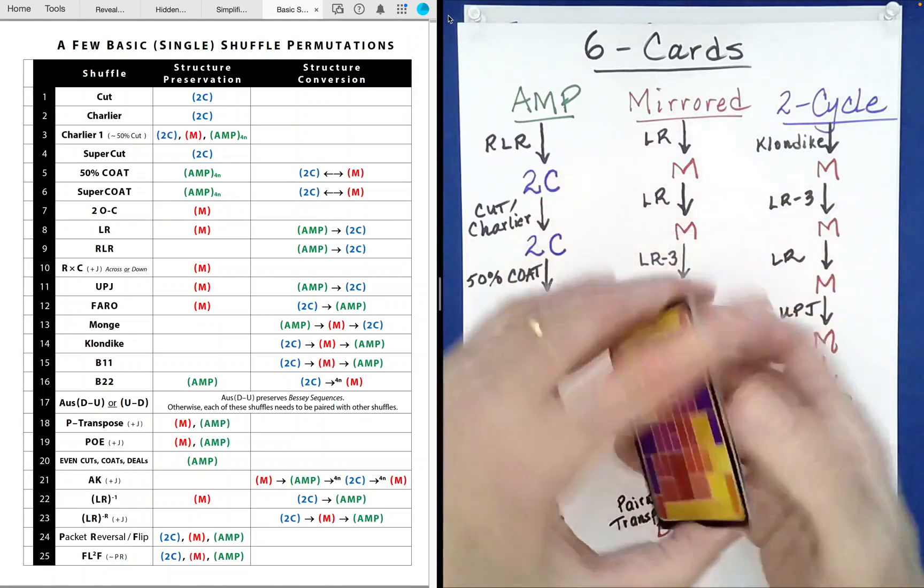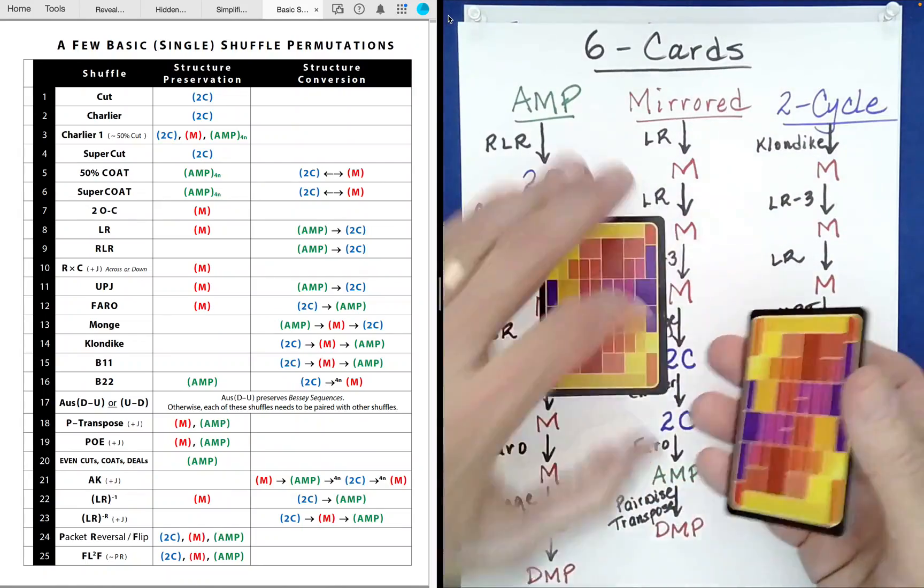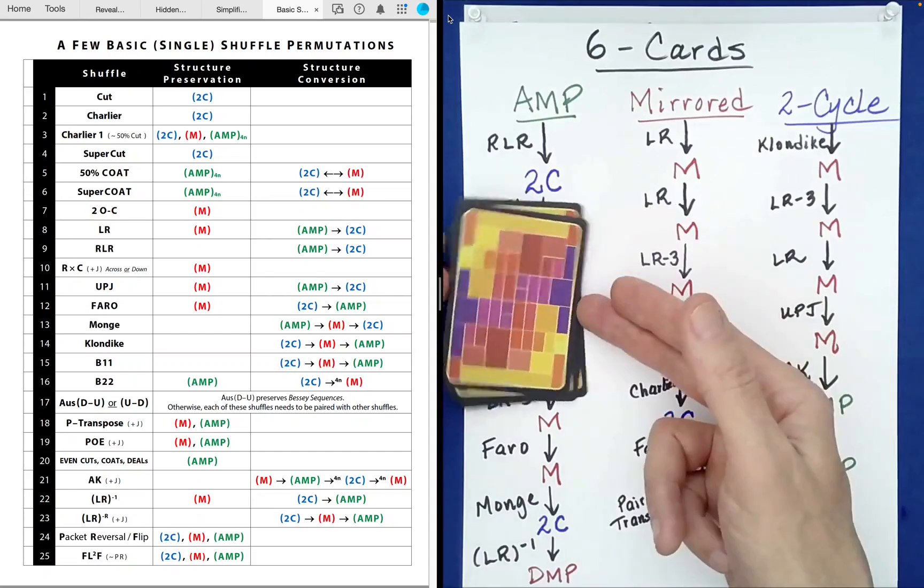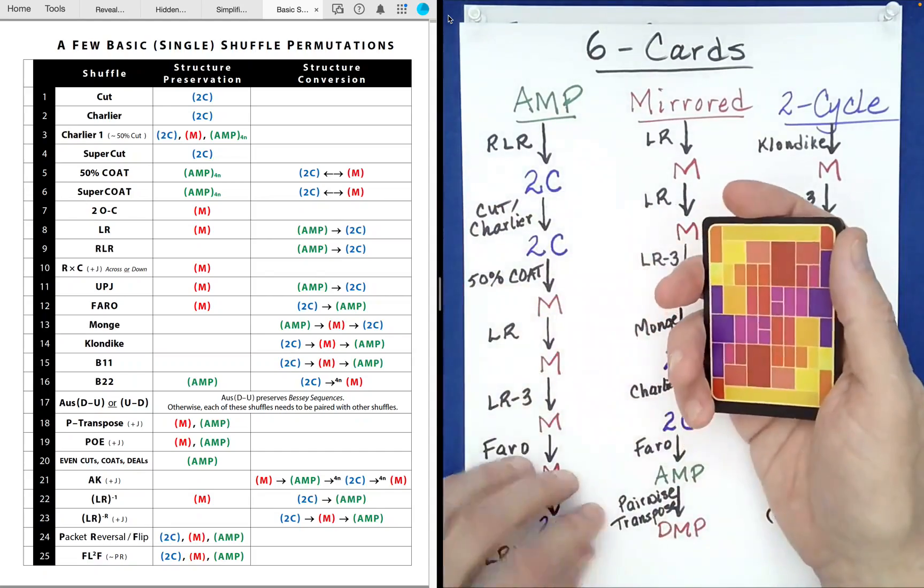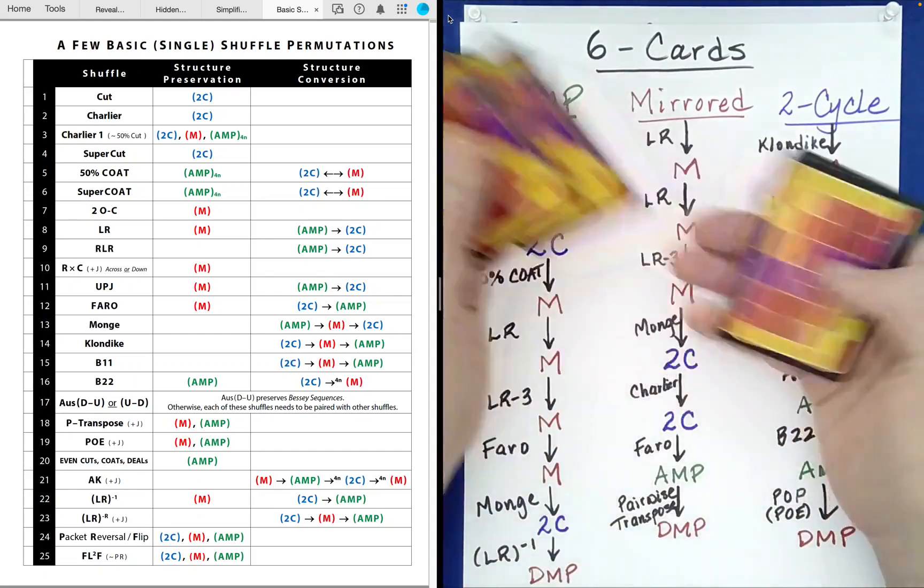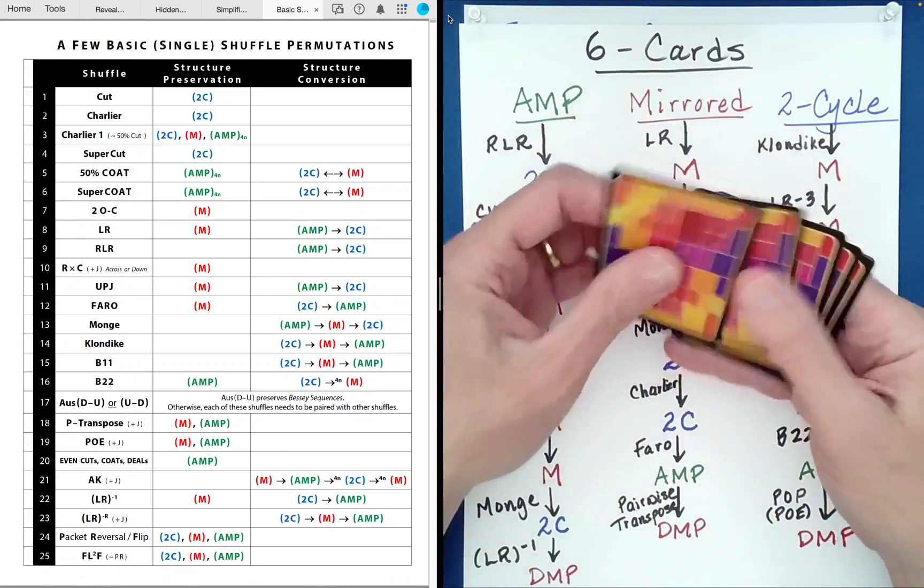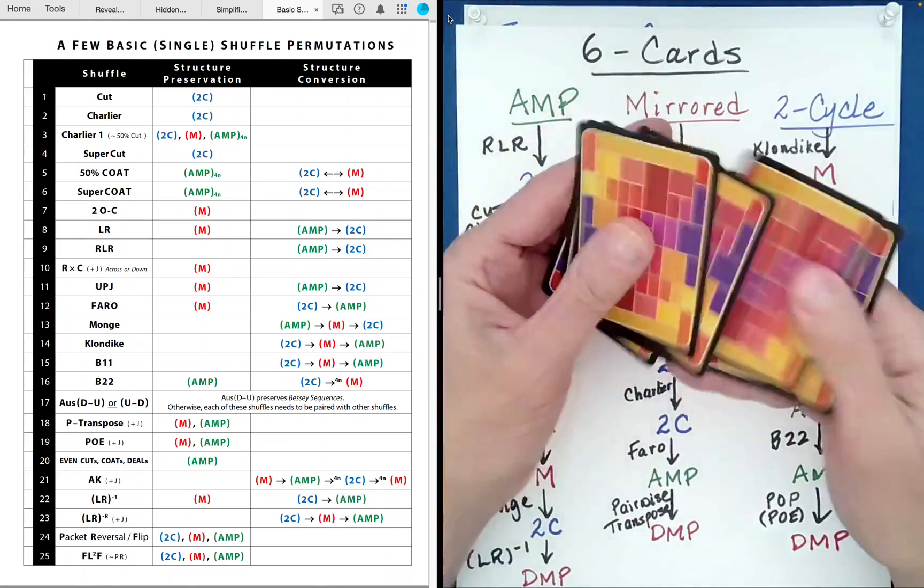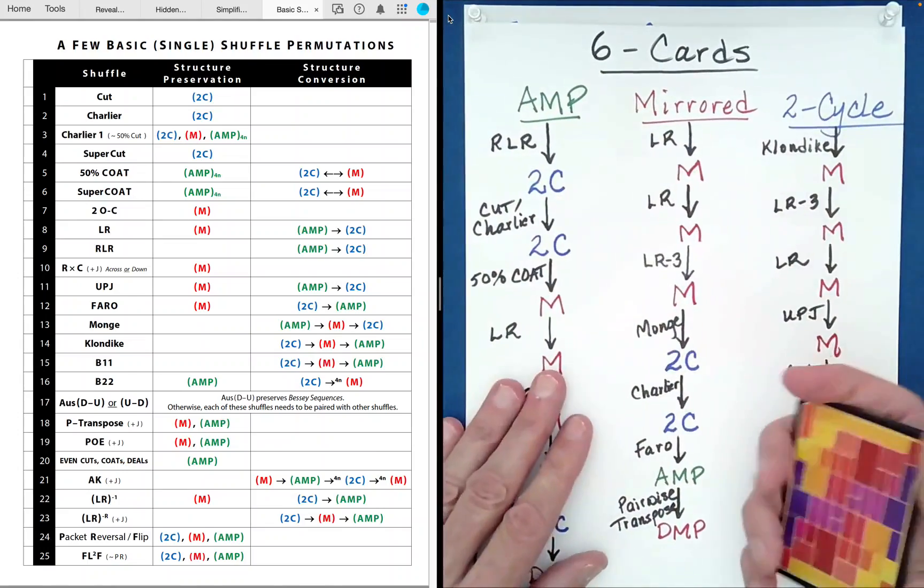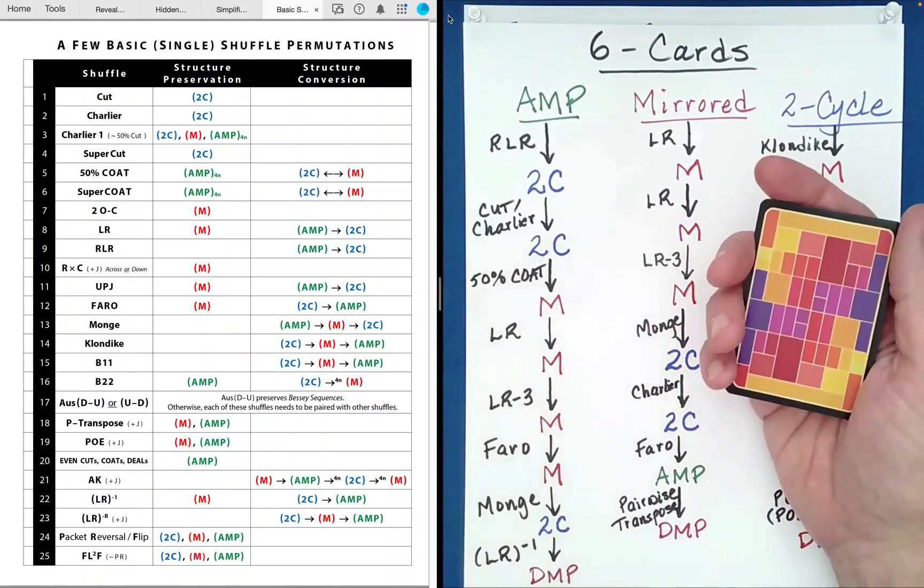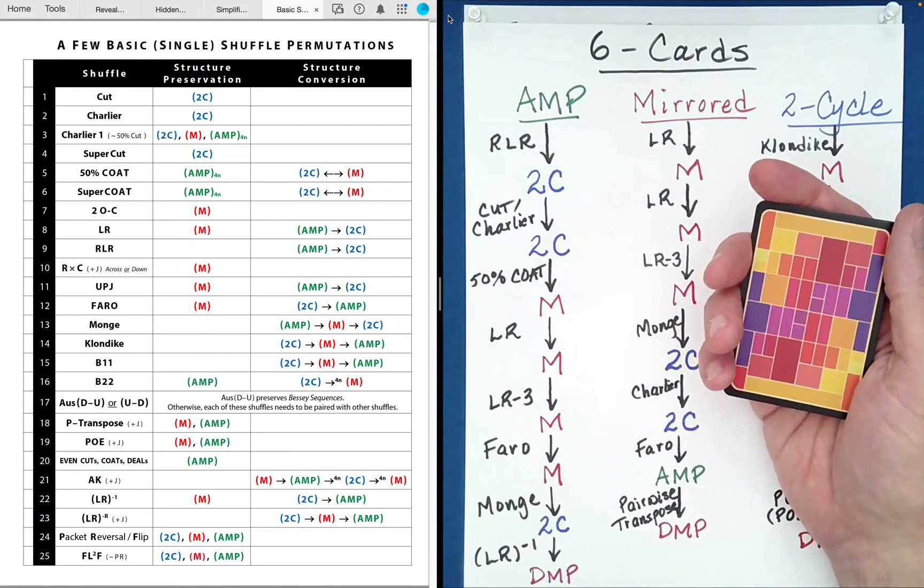You can do a random cut. Spectator can cut this and cut off as many cards from the top and move that to the bottom. The Charlier shuffle, I have a separate video on my channel for the Charlier shuffle. This is a top to bottom, bottom to top, top to bottom. It's a very convincing shuffle. That shuffle doesn't hurt two cycle structures either.